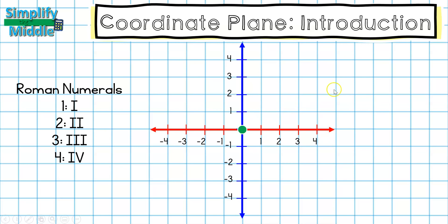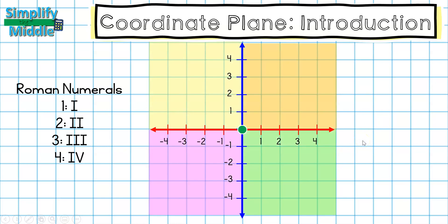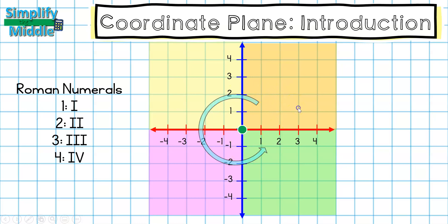The next thing I notice about my coordinate plane is that when I intersect these two number lines, it creates four separate sections. These are known as quadrants, and we number our quadrants using Roman numerals. Roman numeral one looks like an I, two is two I's, three is three I's, and four is an I and the letter V. We always start labeling in our positive quadrant — where both the x-axis and y-axis are positive — so this is quadrant one.